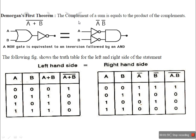Complement means the bar, that is inverting, the NOT gate. Sum is addition, and product is multiplication. So the complement is the bar, the NOT gate. That is: A plus B, the whole bar, is equal to A bar dot B bar. This is De Morgan's First Theorem.